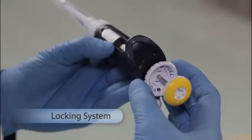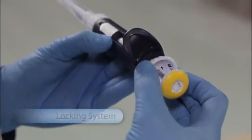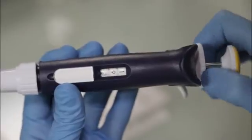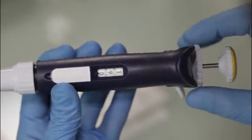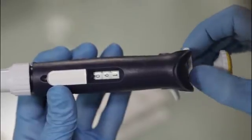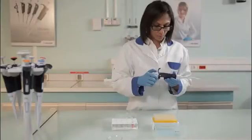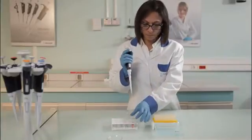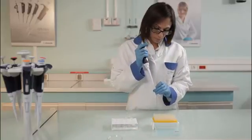A lockable volume system guarantees secure pipetting. It is easy. Just push the thumb wheel up, rotate it to change the volume, and push the thumb wheel down to lock it. Once the thumb wheel is locked, the volume won't change. You can now start pipetting with complete confidence in your results.